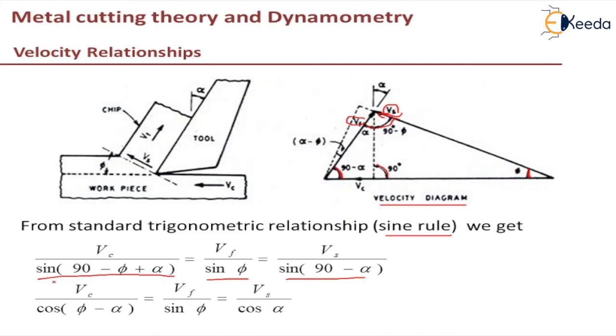That will be Vs by sine 90 minus phi because the opposite of this is this angle. So I can rewrite this equation using allied angles that is Vc by cos phi minus alpha that will be equal to Vf by sine phi that will be equal to Vs by cos alpha.